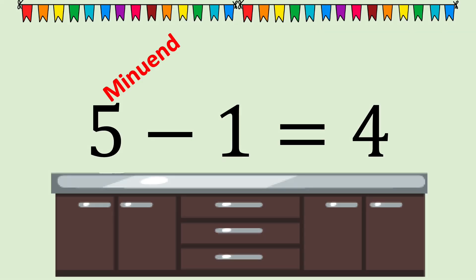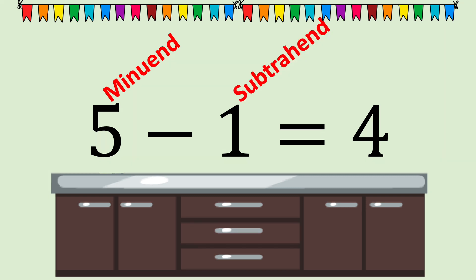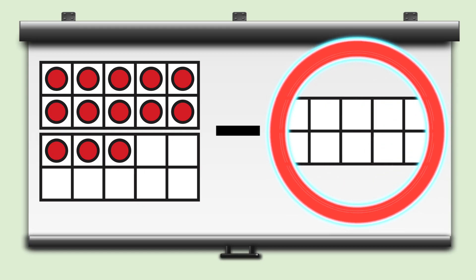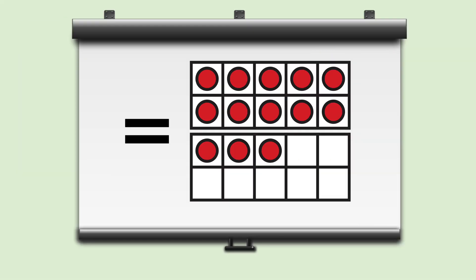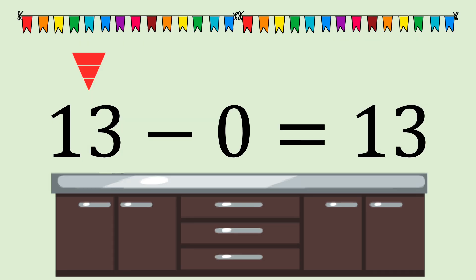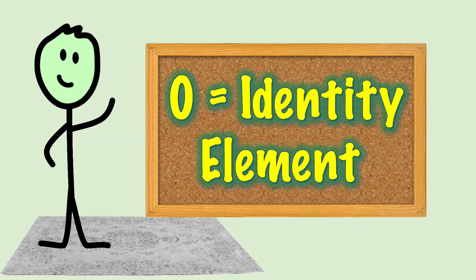Remember our number labels in a subtraction number sentence? The number subtracted from is the minuend. The number subtracted or taken away is the subtrahend. And the answer is called the difference. Here's a subtraction number sentence: thirteen minus zero equals blank. Since we are subtracting zero, or nothing, our original number does not change. The difference is thirteen. Zero is the identity element in subtraction.